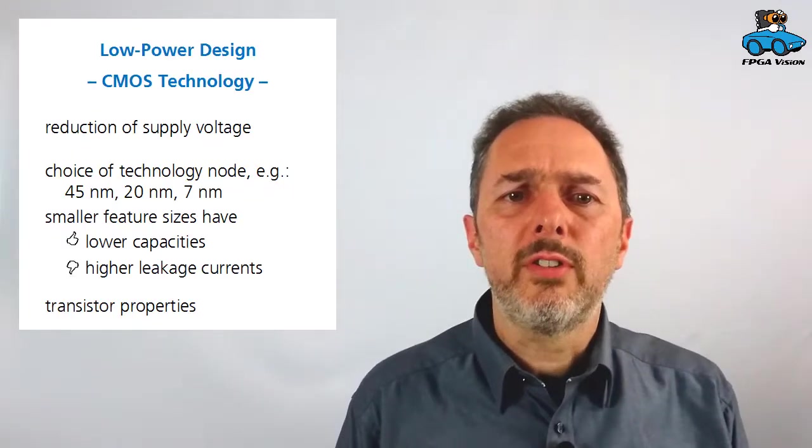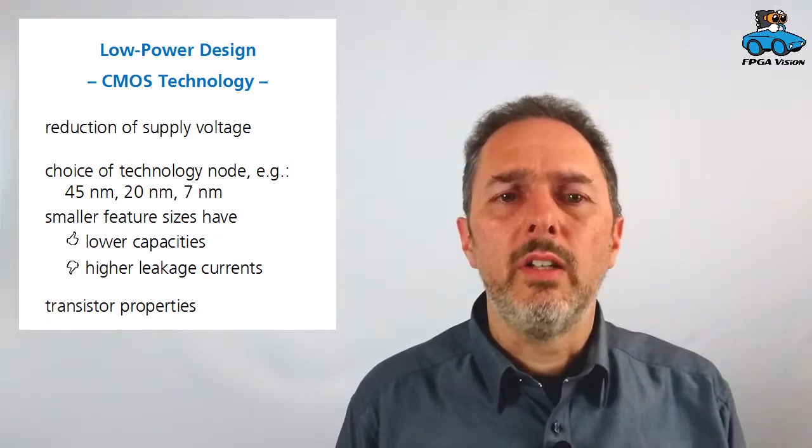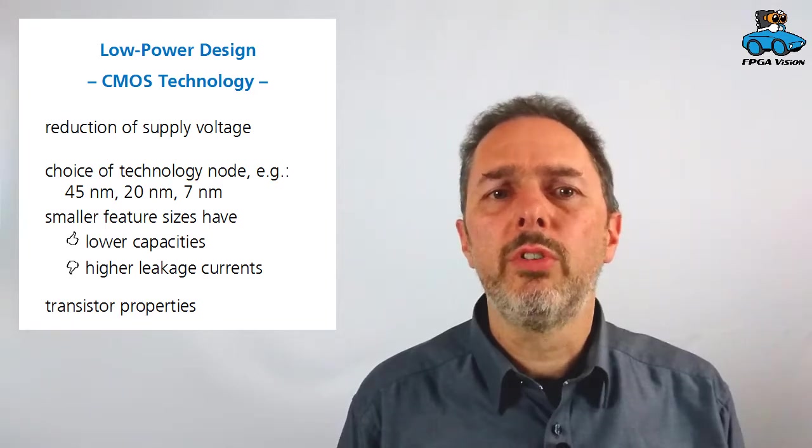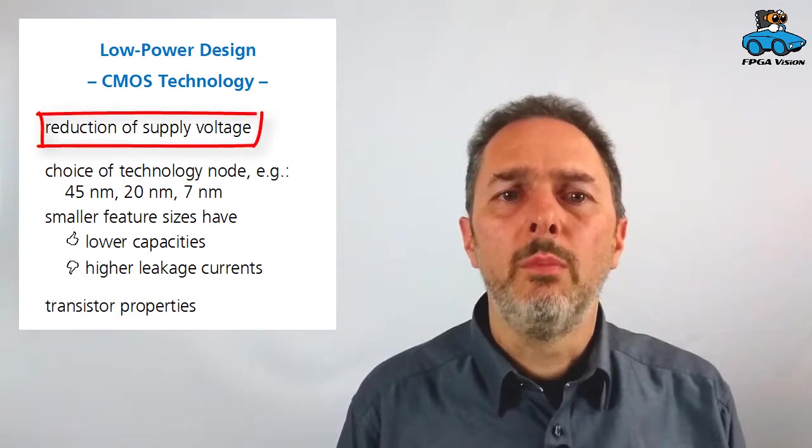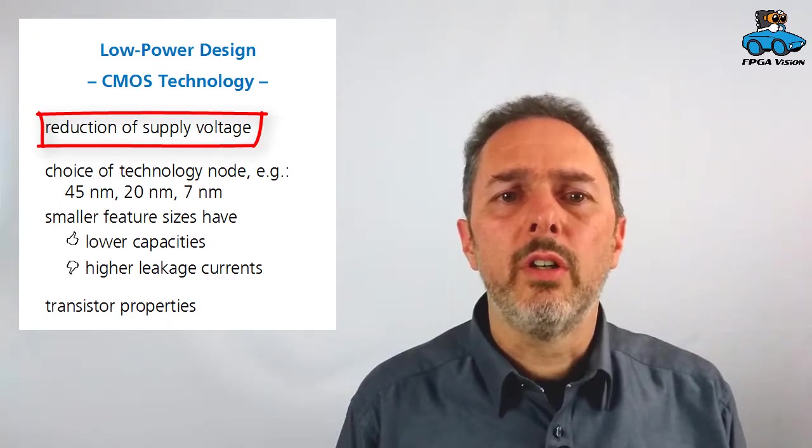One question is still remaining. What can we do to reduce power consumption? Well, there are several options which can be distinguished into different categories. Let's have first a look at the technology. CMOS technology has an impact. And one thing we can do is reduce the supply voltage. It has a quadratic effect, so this is a measure that is really helpful.